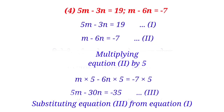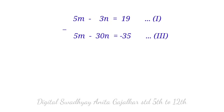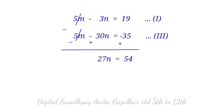Subtracting equation third from equation first: 5m minus 3n equal to 19, minus (5m minus 30n equal to minus 35). Due to subtraction, signs of equation third change, giving 27n equal to 54. Therefore n equal to 2.